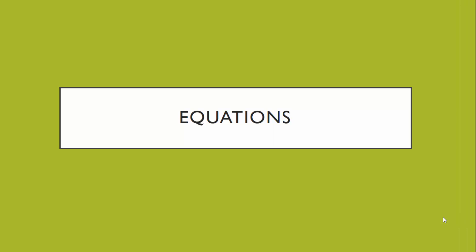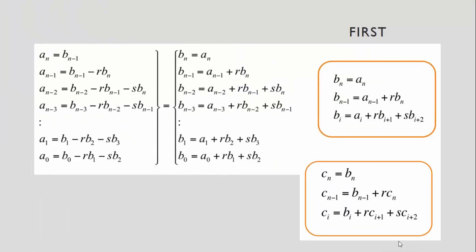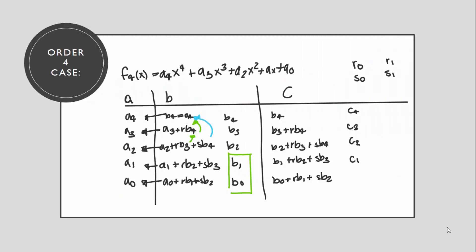Equations. These are the equations that we will need to calculate Bairstow's method. First, we have this set of equations that would depend on the order of the polynomial n. Basically, it all comes down to the three equations on the left. However, this is a pretty complicated way of seeing it. I prefer showing this order four case, where I have a polynomial x to the fourth plus x to the three plus x squared plus x plus another constant. We would start by writing the numbers before the x on the left side below the a, then we would calculate b. The first b is equal to a of n, then we add r to the one below, and then we would add r and s to all the other ones below. Basically, the same thing would be for the c.